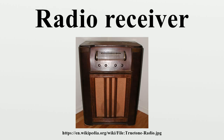In radio communications, a radio receiver is an electronic device that receives radio waves and converts the information carried by them to a usable form. It is used with an antenna. The antenna intercepts radio waves and converts them to tiny alternating currents which are applied to the receiver, and the receiver extracts the desired information. The receiver uses electronic filters to separate the desired radio frequency signal from all the other signals picked up by the antenna.